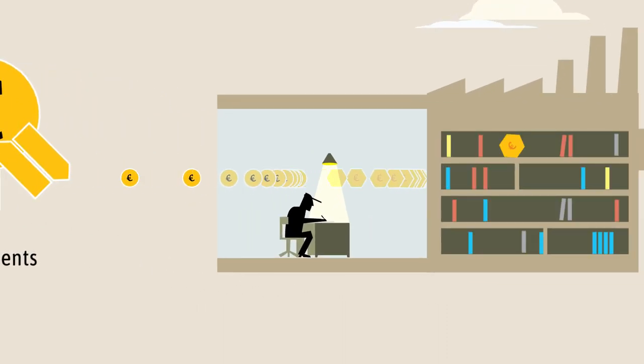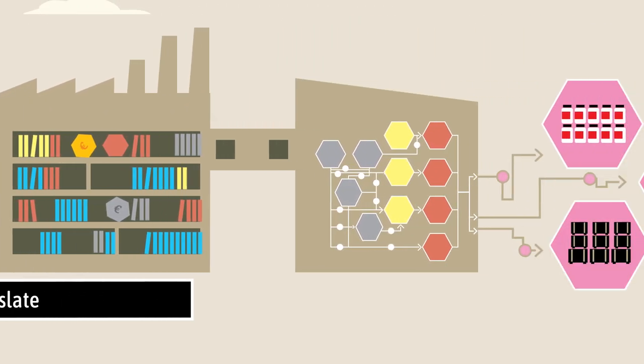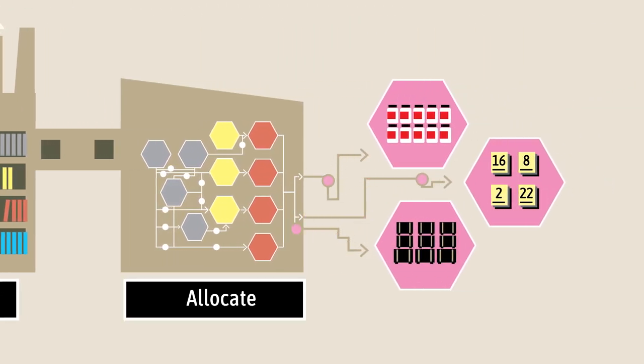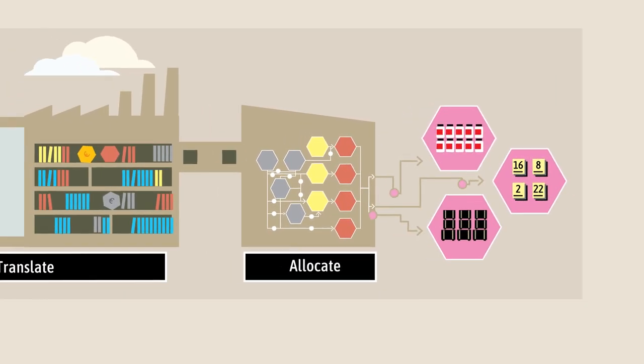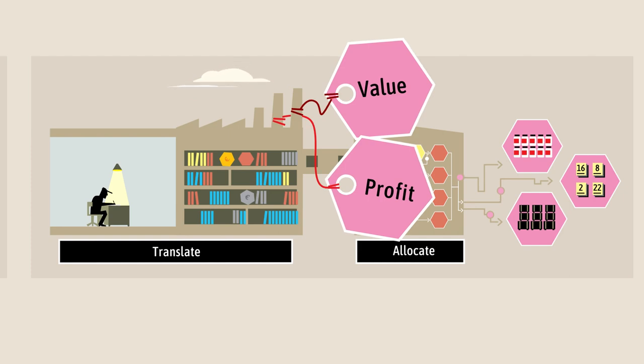Accounting systems are designed to translate these cash flows into revenues and costs, and then allocate these costs to products, stocks, or periods. That enables the business to calculate the value and profit at the end of the financial year.